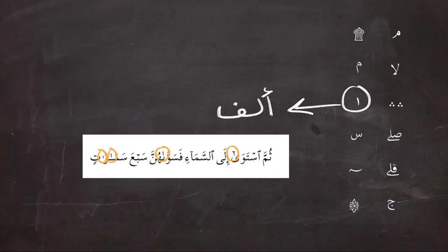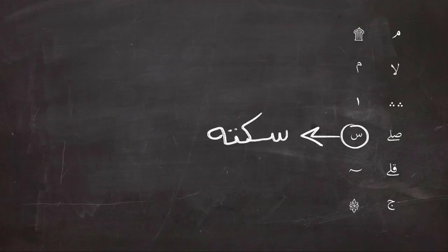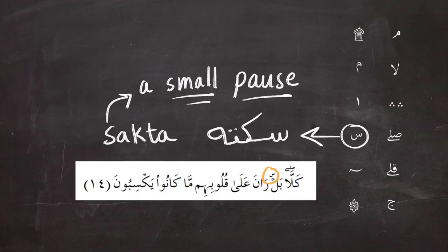These symbols all mean there's an Alif there. Next, the small Seen means a small or very little pause. It doesn't mean you have to stop and take a breath—it means you stop very momentarily for like half a second and then continue reading. It's a very short pause.